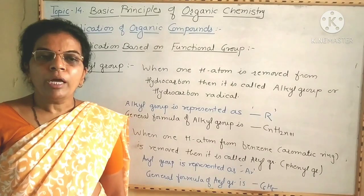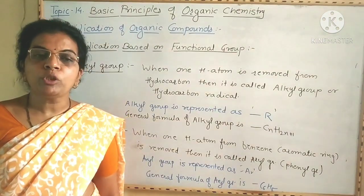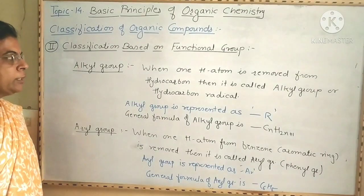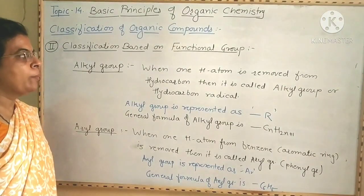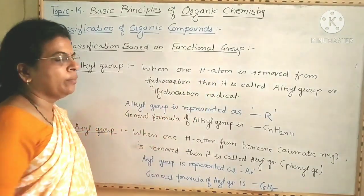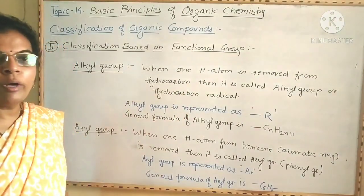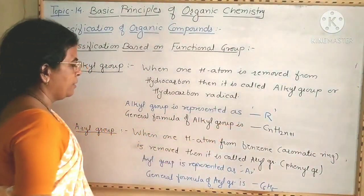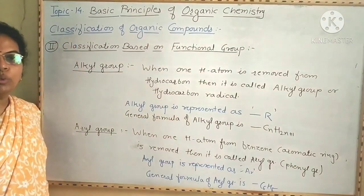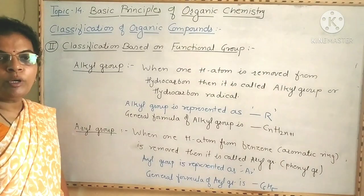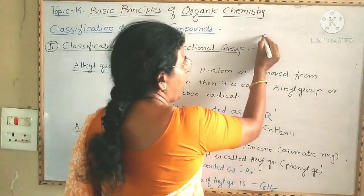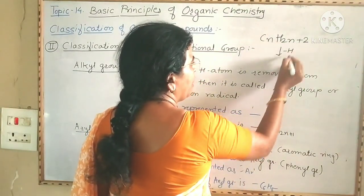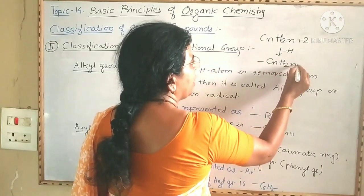Before the classification based on functional group, the first point is: what is known as an alkyl group? An alkyl group is a hydrocarbon radical. When one hydrogen atom is removed from a hydrocarbon, it is called an alkyl group or hydrocarbon radical. Alkyl group is represented as R. The general formula of alkyl group is CnH2n+1, since the general formula of alkane is CnH2n+2, and when one hydrogen atom is removed it becomes CnH2n+1.